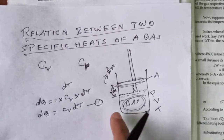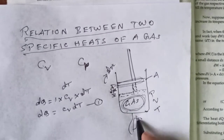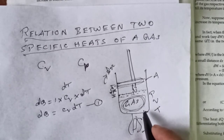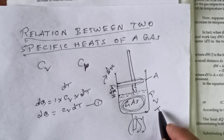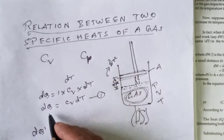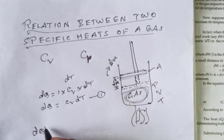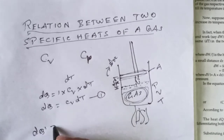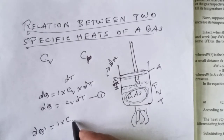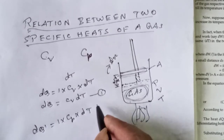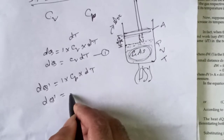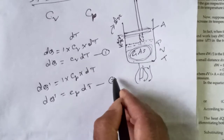Now suppose heat is supplied to the gas at constant pressure, and the temperature again increases by dT. According to the thermodynamic equation, the heat supplied is dQ' = 1 mole × Cp × dT. So dQ' = Cp dT. Let's call this equation number 2.